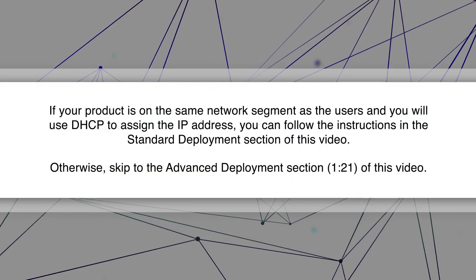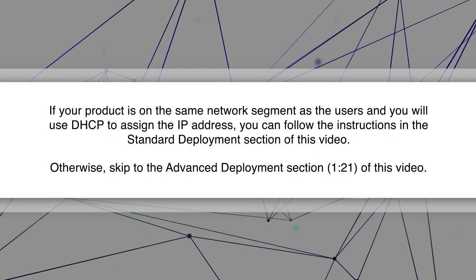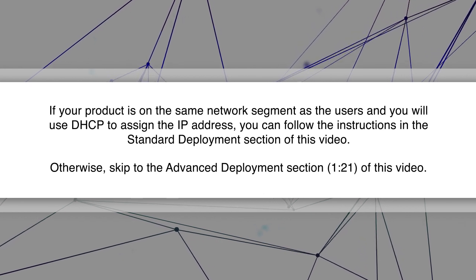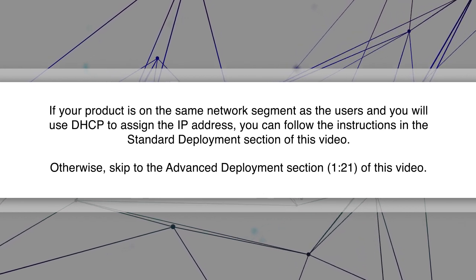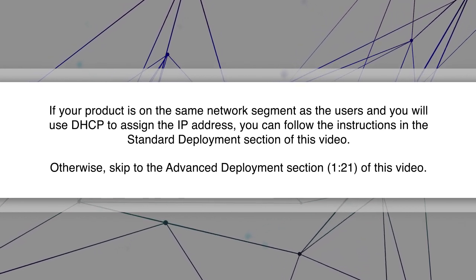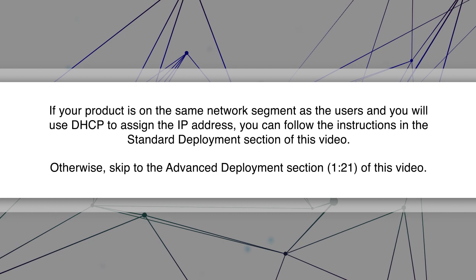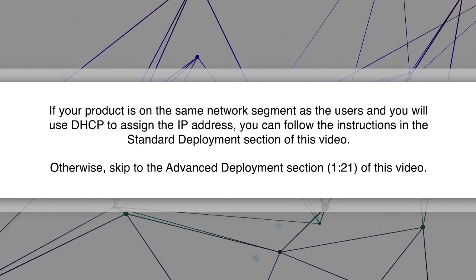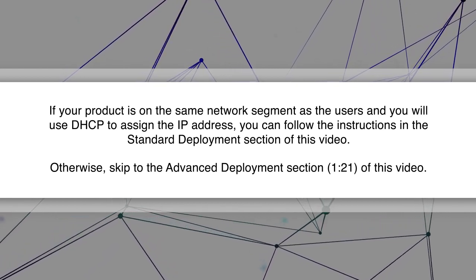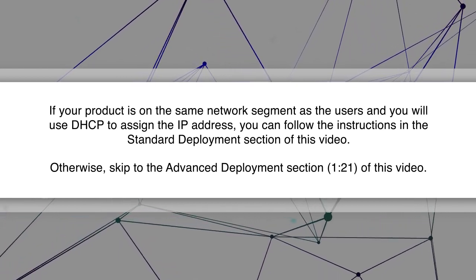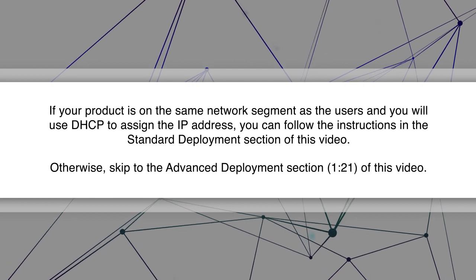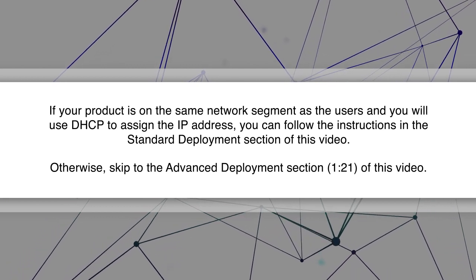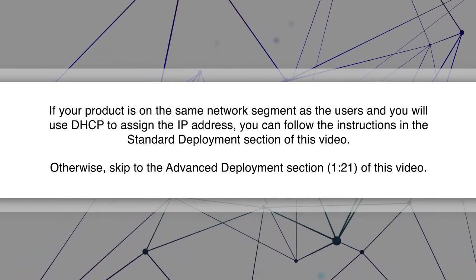If your product is on the same network segment as the users and you will use DHCP to assign the IP address, you can follow the instructions in the standard deployment section of this video. Otherwise, skip to the advanced deployment section of this video.